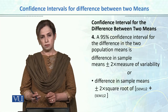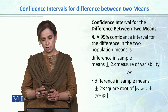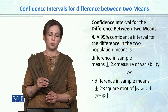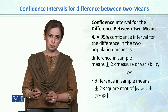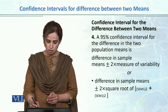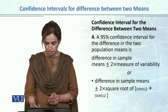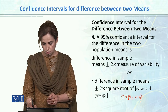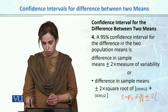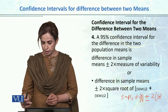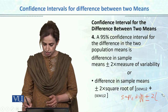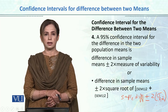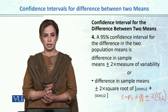If you want to construct the confidence interval for the difference between two means, the formula is the same as before: the sample difference (mean1 minus mean2) is used to estimate the population difference. We take the sample difference plus or minus Z multiplied by the standard error of mean difference.